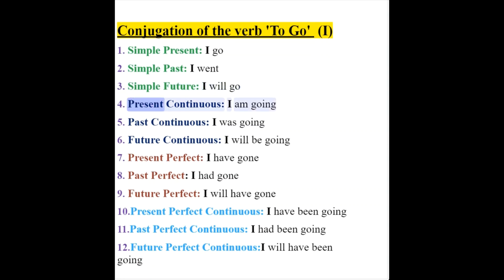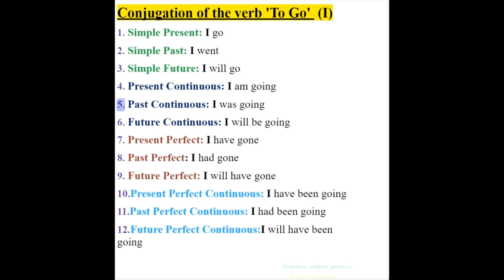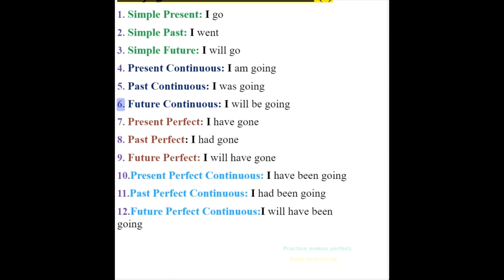4. Present continuous: I am going. 5. Past continuous: I was going. 6. Future continuous: I will be going.